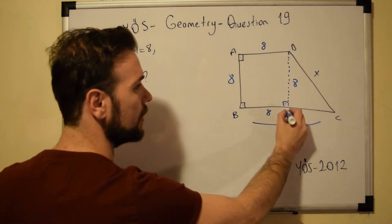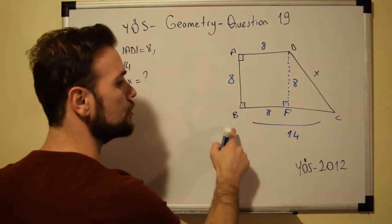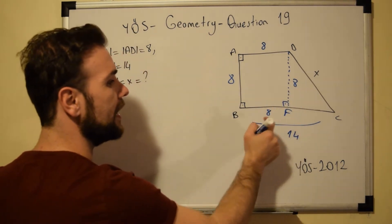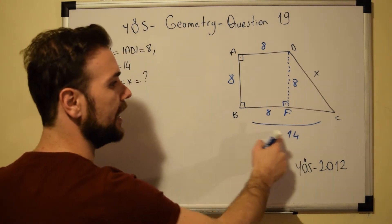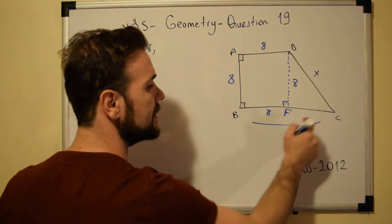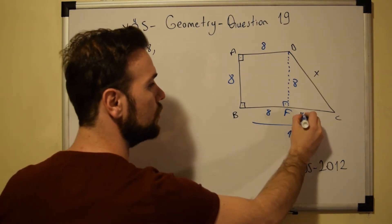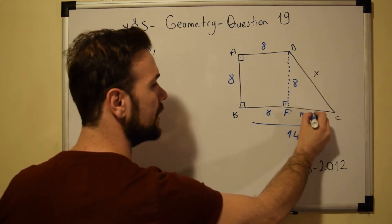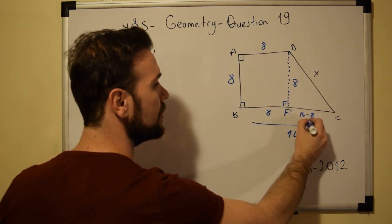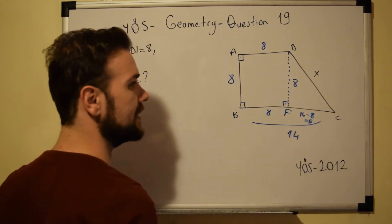Let me call this point F. So if BF is equal to 8, then FC will be equal to 14 minus 8, which is equal to 6.